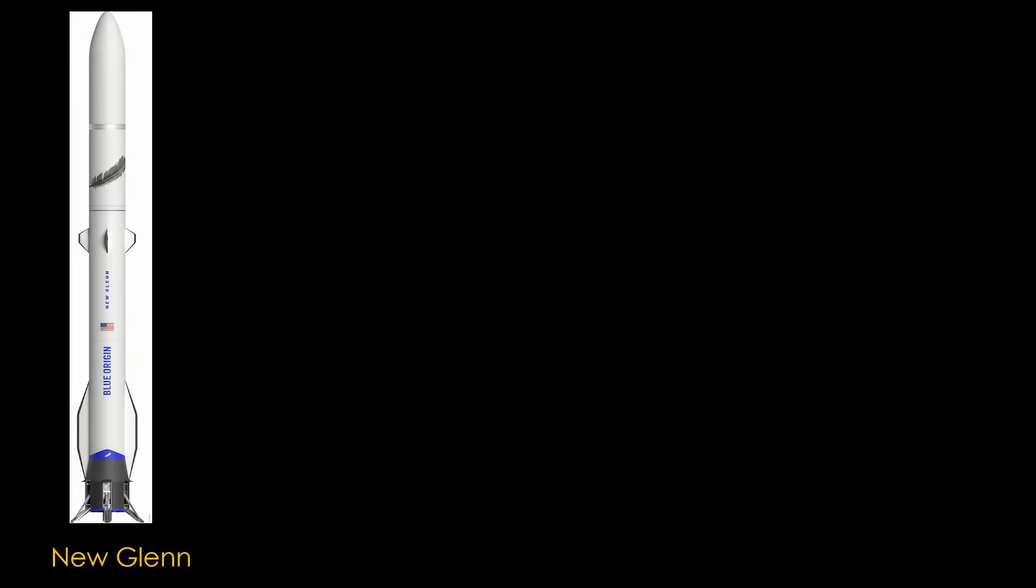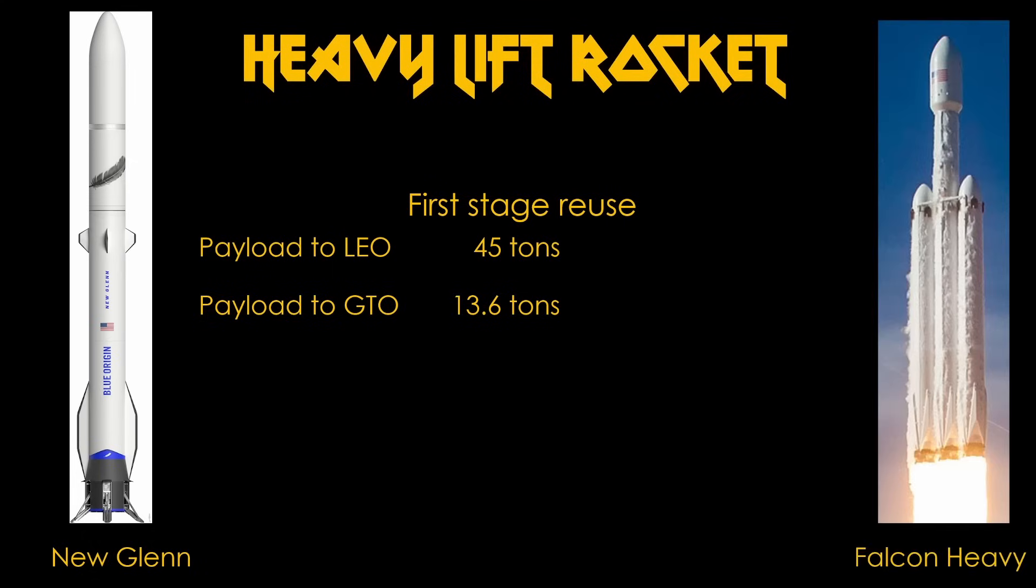New Glenn is a strangely large rocket. The specs say that with first stage reuse, it can do 45 tons to low earth orbit and 13.6 tons to geosynchronous transfer orbit. That puts it in the heavy lift rocket class, and the payloads it carries would be pretty similar to those carried by Falcon Heavy.